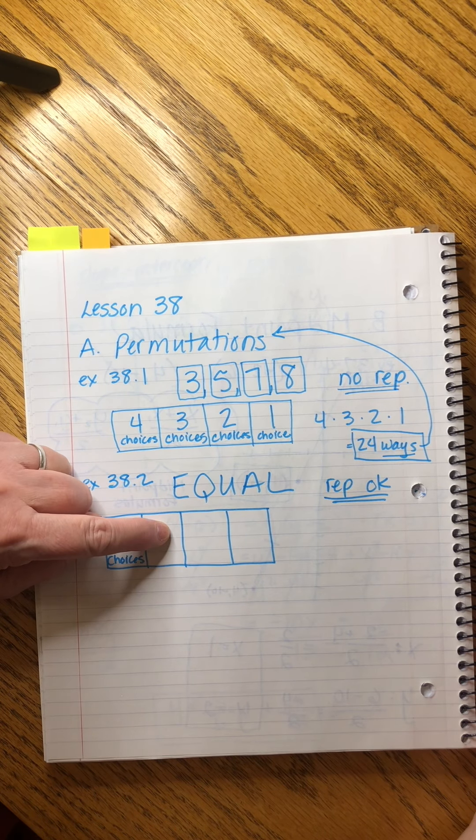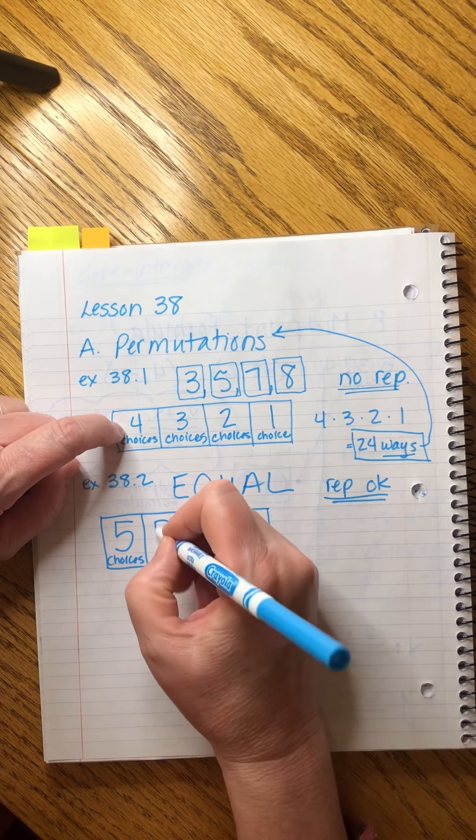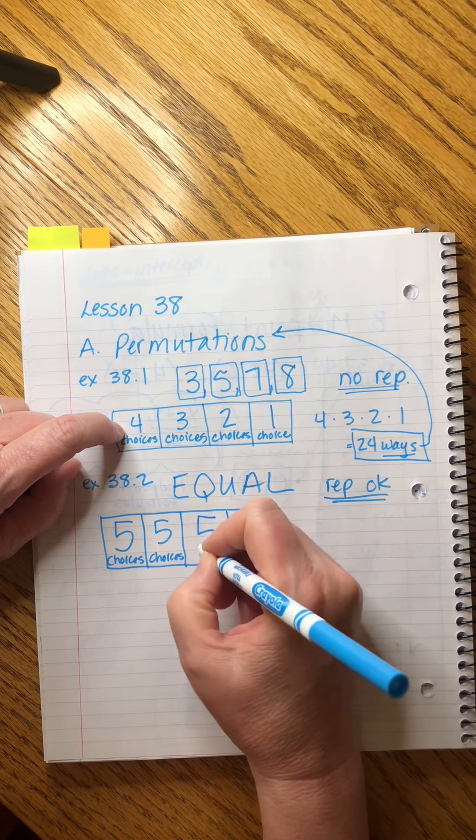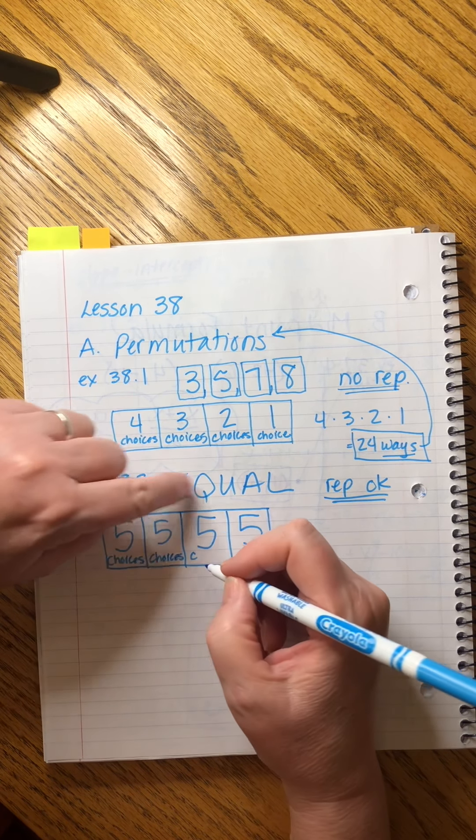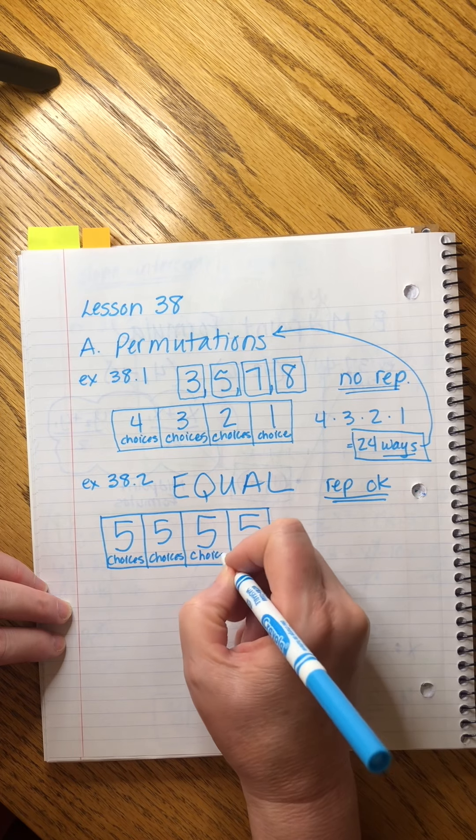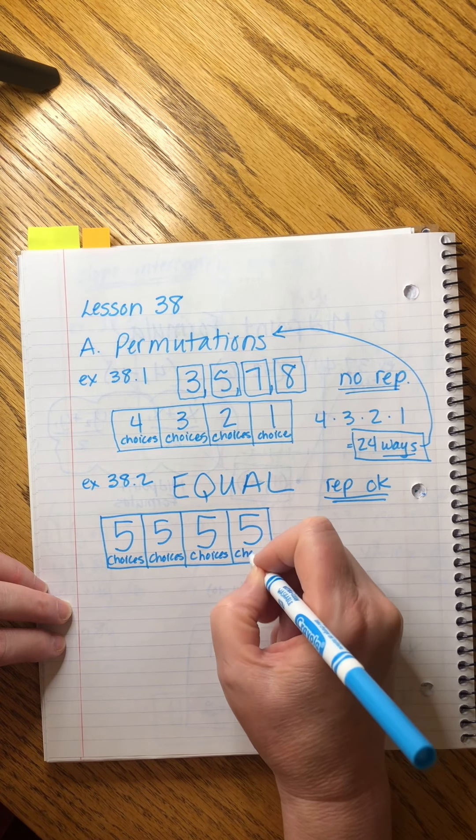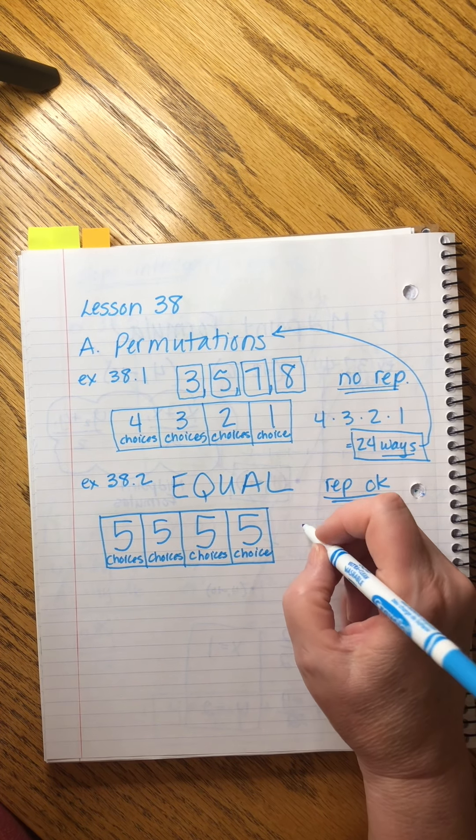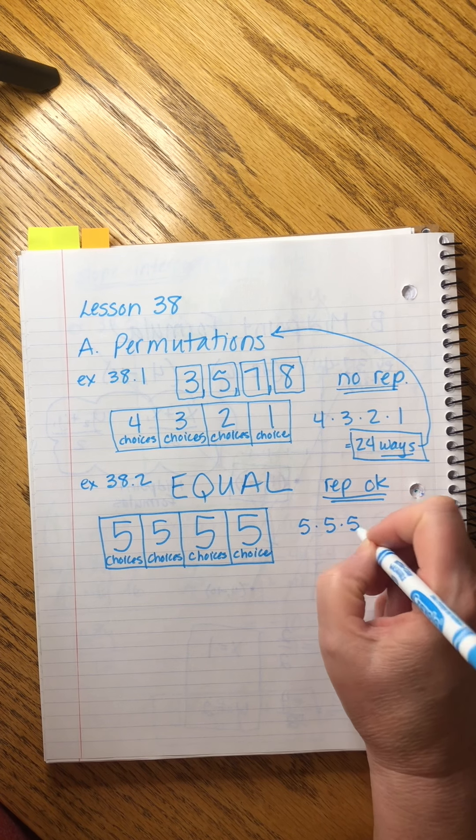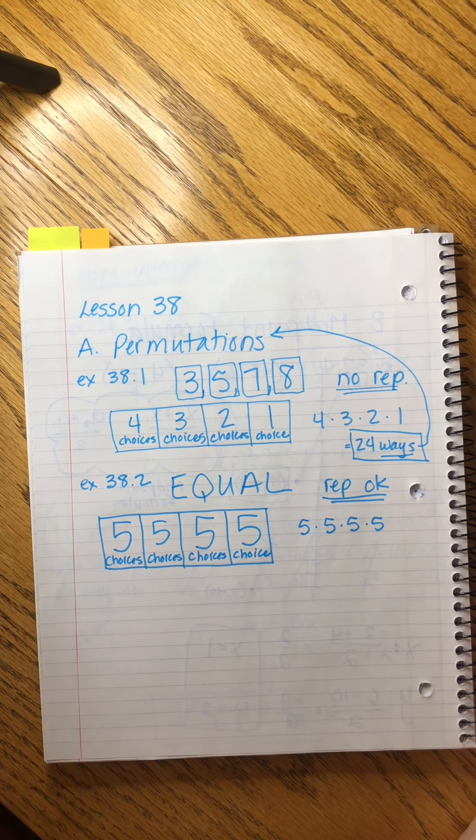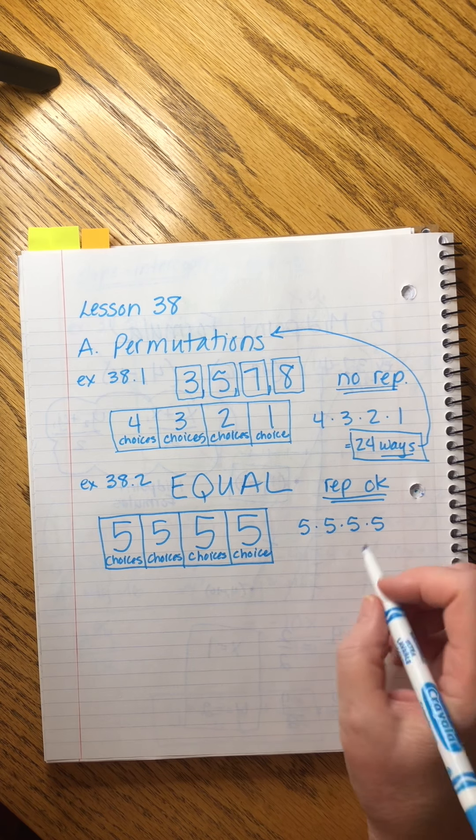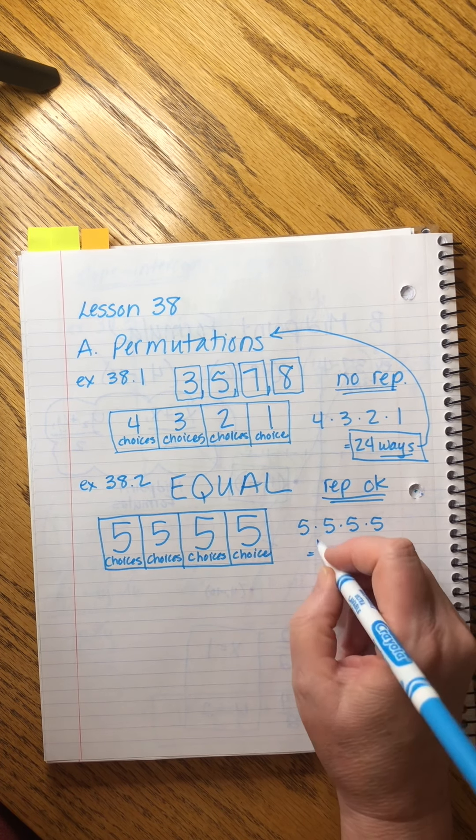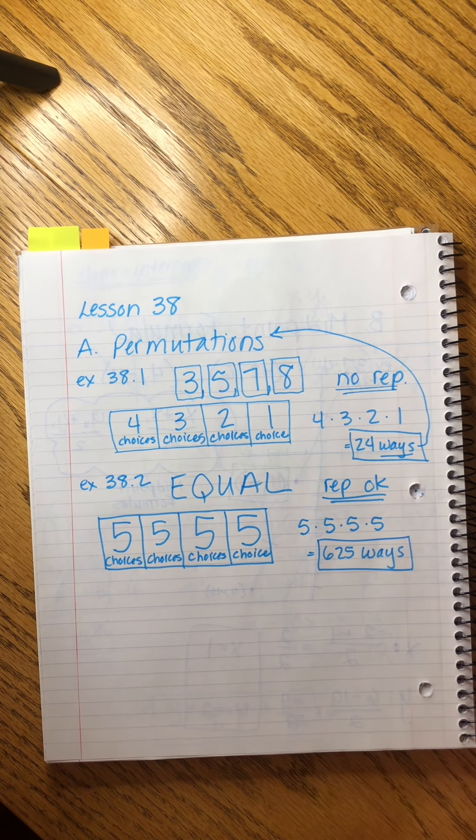What about when we get to the second spot? Well, we can repeat. So that means we can use any of the five. And so on, because we're allowed to repeat, we can use any one of those five letters when we fill up each box. This is the last time I'm going to write choices, but you understand what that means. So to find out how many permutations exist in this scenario, it's five times five. It's five to the fourth, which is what? 625, right? So 625 ways. We can pack those letters in there. Okay. Cool.